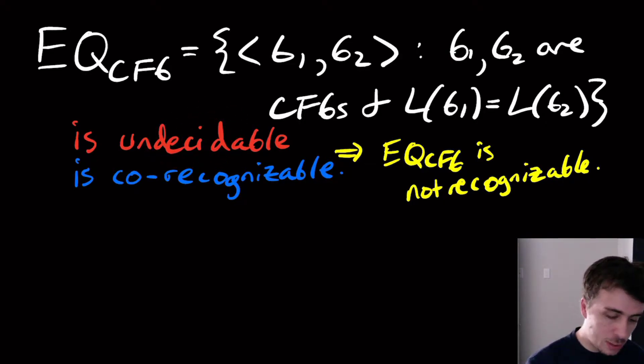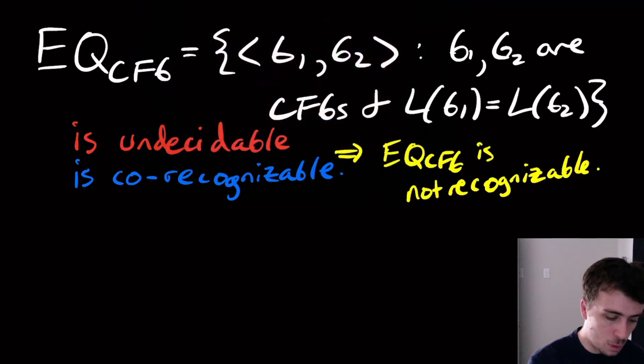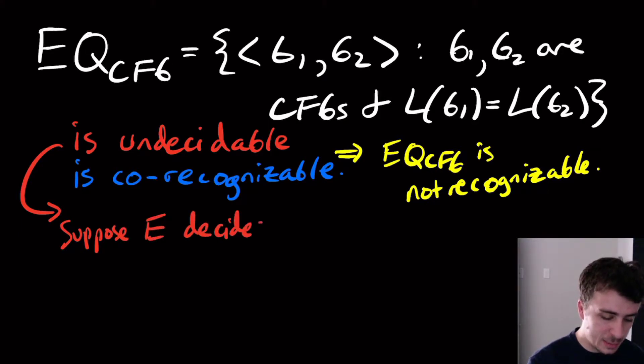So how do you show that this is undecidable? Well, we showed that the universality problem for CFGs is undecidable too. So let's try to decide that, assuming a decider for the equality problem. Let's suppose that E decides EQ, the equality problem.